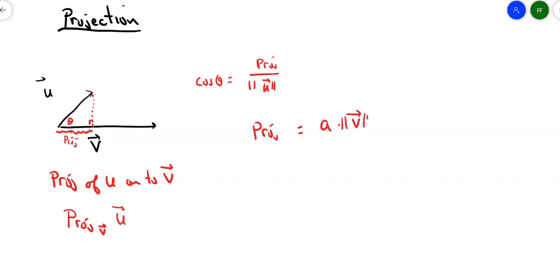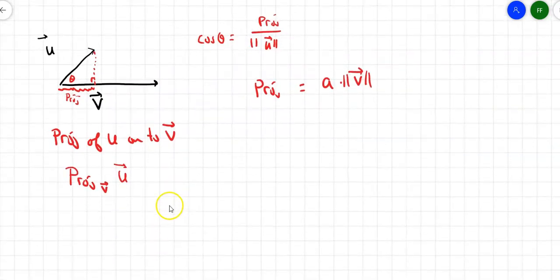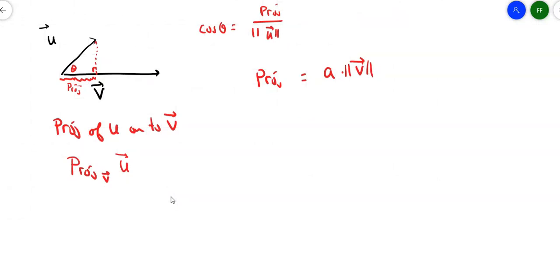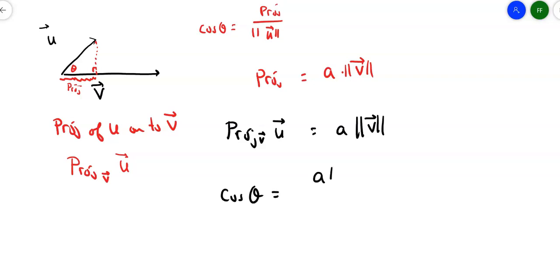So if I can figure out what that scalar is, that will tell me how much of the magnitude of vector v I want. Let's run through the process and see where the formula comes from — I could just give you the formula, but that wouldn't be nearly as much fun. The projection of u onto v is some scalar times the magnitude of vector v. That must mean that the cosine of theta is that projection over the magnitude of u. So I'm calling my projection a times the magnitude of v, divided by the magnitude of vector u.